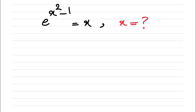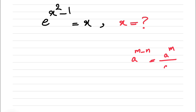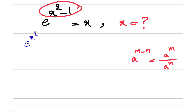Hey guys, this is going to be an interesting one, and we're going to solve this using the Lambert W function. So from the laws of the exponent, we know when we have a to the power of m minus n, this will be equal to a to the m over a to the n, which is the case in here. So basically we have e to the power of x squared over e to the 1 is equal to x.